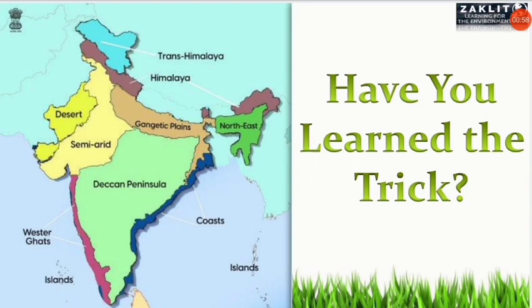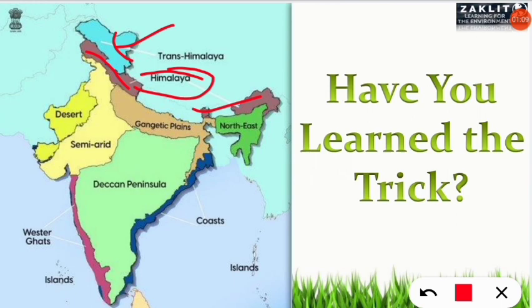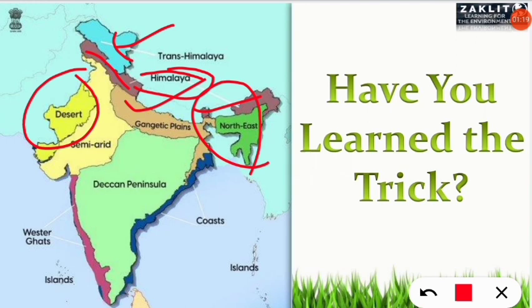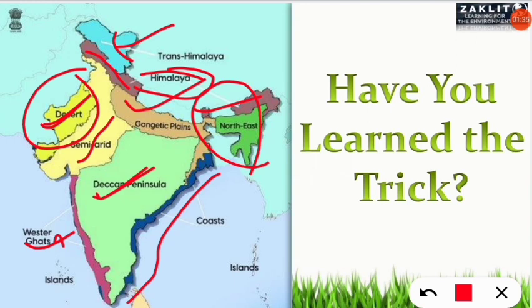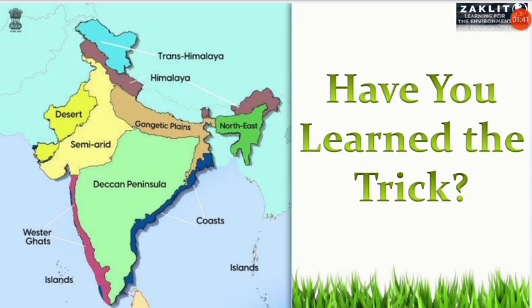First is the Trans-Himalaya zone — the other side of the Himalaya — shown in blue color. Then comes the Himalaya region, covering the northeastern part above it. Next is the Gangetic Plain. Fourth is the northeast part of India. Fifth is the desert region. Sixth is the semi-arid zone between the deserts and the Deccan Peninsula. Then the Deccan Peninsula, Western Ghats, the coastal region of India, and finally the islands of India. These are the ten biogeographic zones.